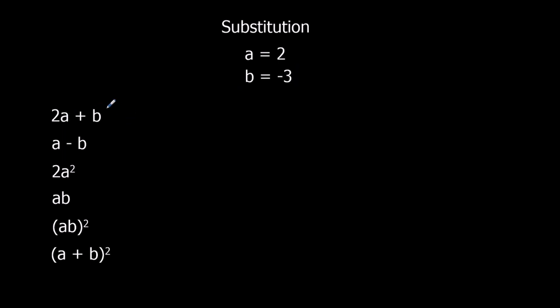So 2A, 2 times 2, plus minus 3, that's 4. Plus minus means minus, so 4 minus 3 is 1. A minus B, so I've got 2 minus minus 3. Minus minus means plus, so 2 plus 3 is 5.